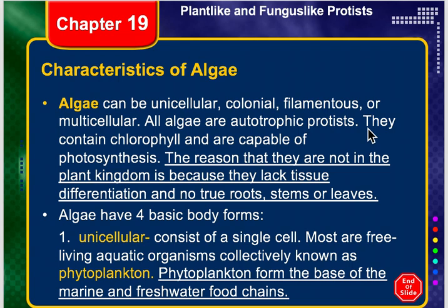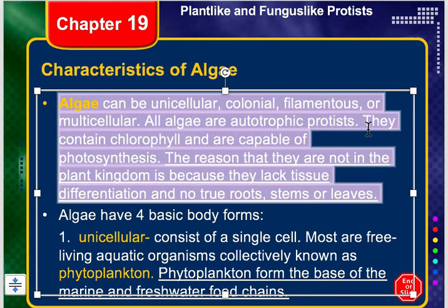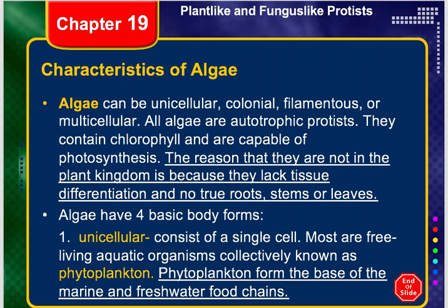Phytoplankton is also the base of our food chain in the water, which means it is producing a lot of the oxygen that gets put back into the atmosphere. On land, the base of the food chain is our plants, because plants make oxygen and put it into the atmosphere. However, 60% of our oxygen in the atmosphere is actually coming from our phytoplankton. So it's very important that we do not pollute our waters, because if we do, not only will these animals have nothing to eat, but our phytoplankton will die — and the oxygen that gets put back into our atmosphere won't be there, and we're going to have a struggle with breathing.